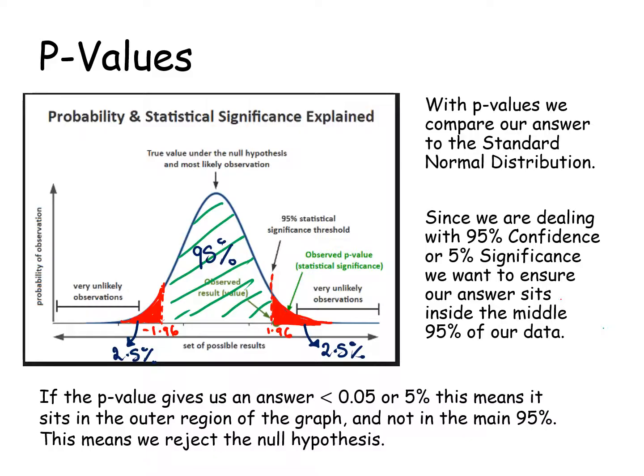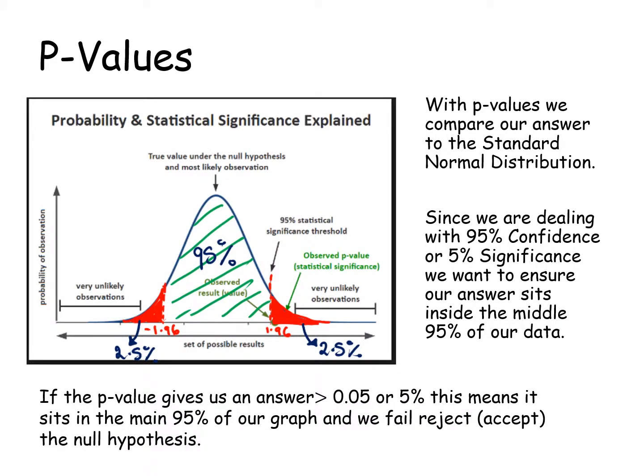If the p-value is less than 0.05 or 5%, it means it's sitting out in our tail, in the rejection region. If it's greater than 0.05, that means it will sit in the main 95% of our graph and we fail to reject it. If the p-value is bigger than 5%, it's beyond our tails and into the middle, and that is good.